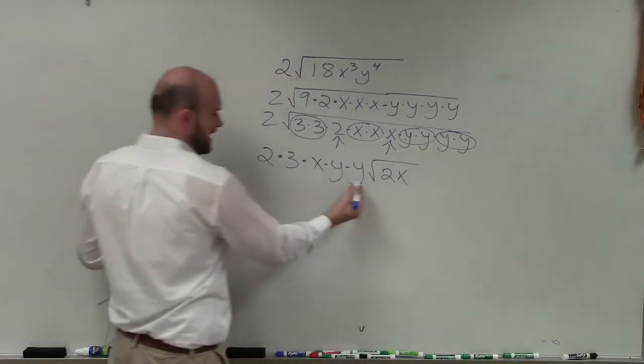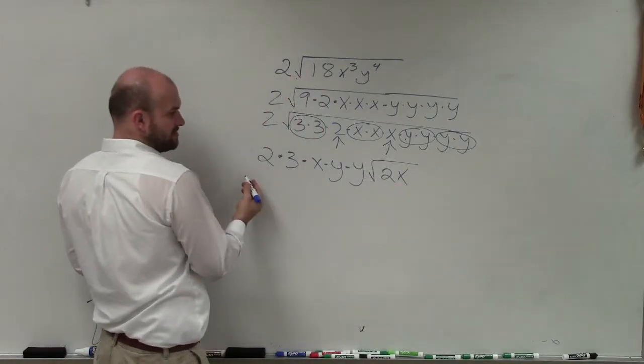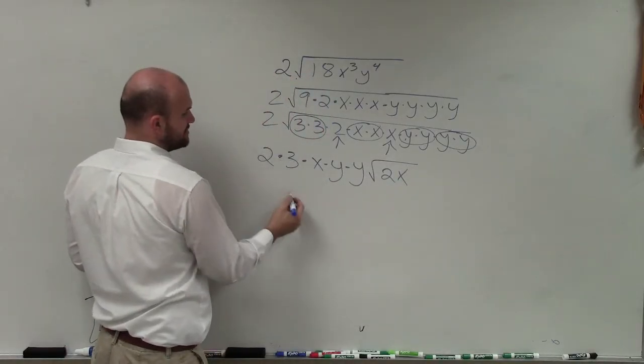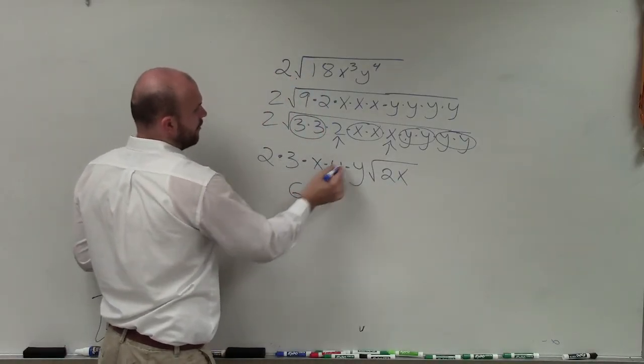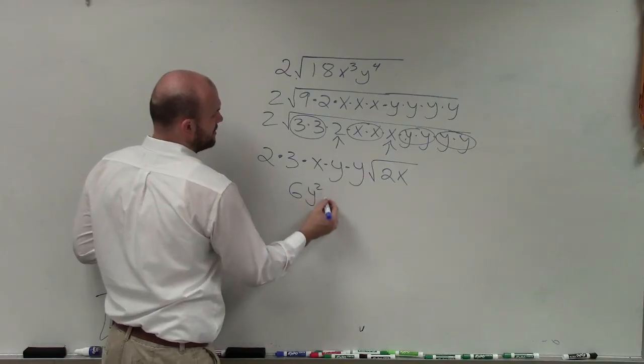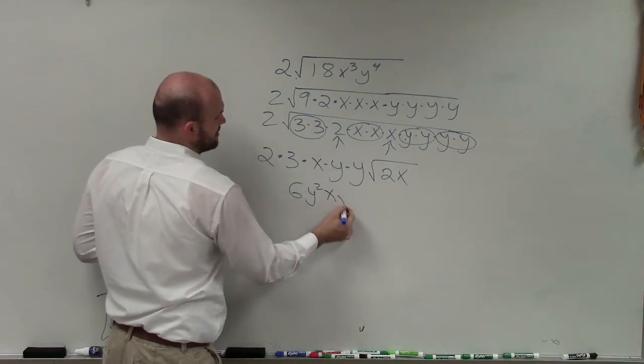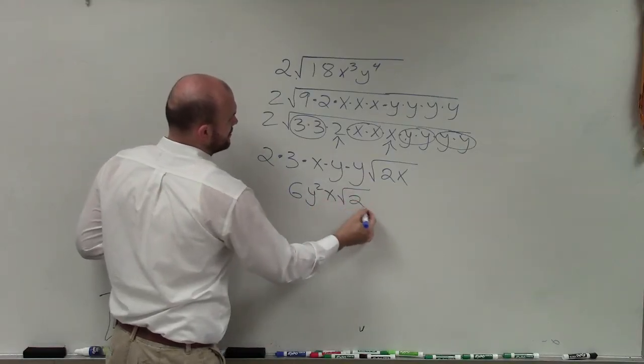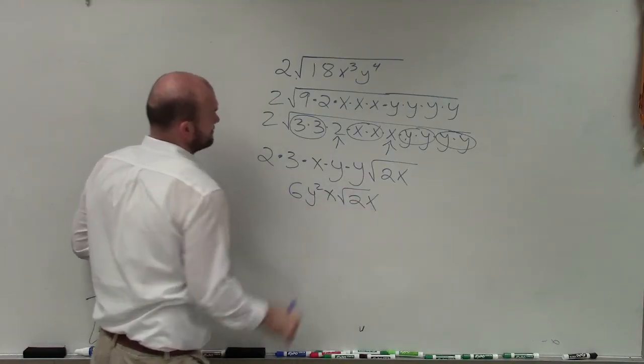Now I simplify outside: 2 times 3 is 6, y times y is y squared, times x, times the square root of 2x.